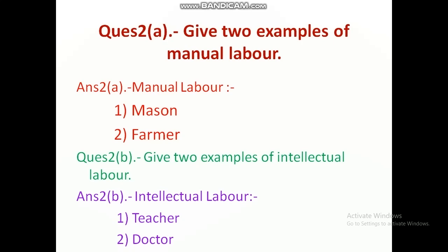Second question: I have divided your second question in two parts. You will also divide that in two parts, Question 2a and 2b. Question 2a is, give two examples of manual labor. Here you will write the answer. Firstly you will make a heading of manual labor, and then write the examples. First is mason, second is farmer. You can write some other examples of manual labor also. It is not necessary that you will write only mason or farmer.